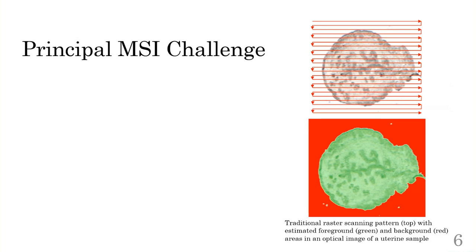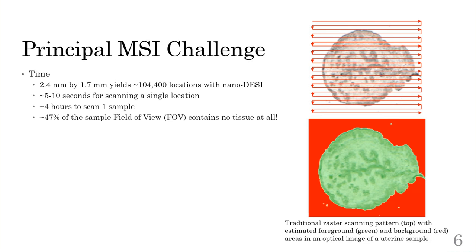MSI in general obtains rather absurdly large quantities of molecular information, and it's become both a unique and critical tool in medical research. However, this comes at the price of time investment. Each single position in the sample can take upwards of 10 seconds to actually measure. This means that to use nano DESI on a sample, such as the uterine section shown on the right, processing over 104,000 locations takes roughly four hours. This is in large part due to the reliance on a traditional raster scanning pattern, which obtains not only data irrelevant to an experimentalist's objectives, but also background information. For the sample shown, roughly 50% of the total area contains no tissue at all, suggesting a clear potential for throughput to be doubled without any losses.